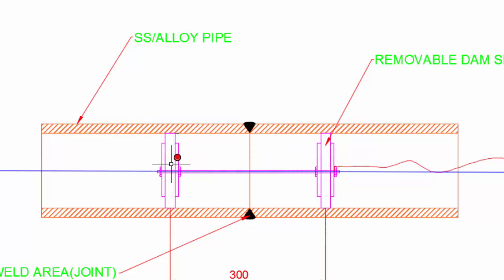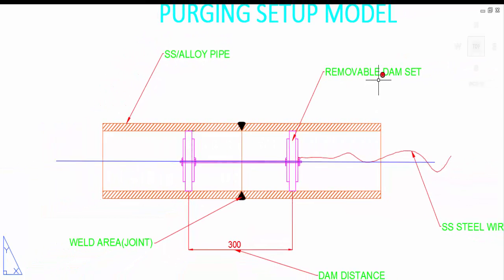Dams have two types: one is removable dam, another one is paper dam. Here we will use removable dam. This removable dam will be made from sponge or rubber.